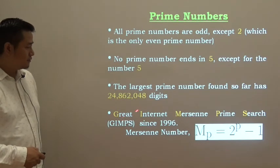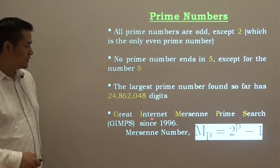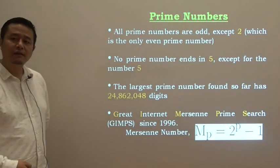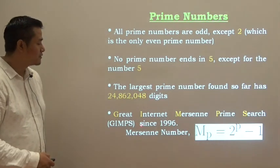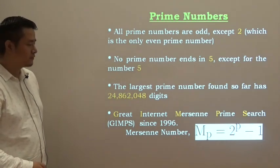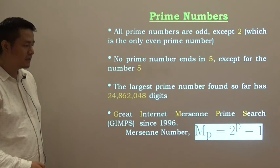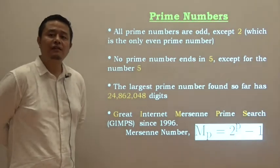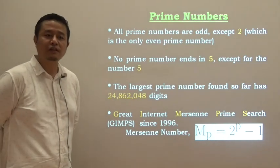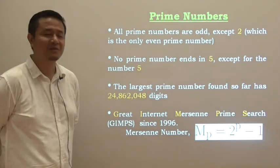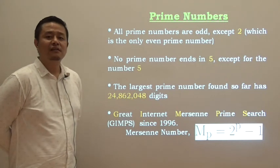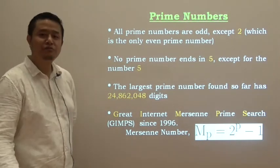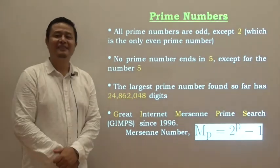There is one organization called Great Internet Mersenne Prime Search, in short GIMPS. Since 1996, they are dedicated to finding more and more prime numbers, larger prime numbers. There is a number called Mersenne number, of the form Mp equals 2 to the power P minus 1, where P is a prime number itself. The idea and characteristics of prime numbers has sparked interest in many scholars and enthusiasts. The applications or more knowledge are yet to be unraveled. I hope you enjoy the talk. Thank you.